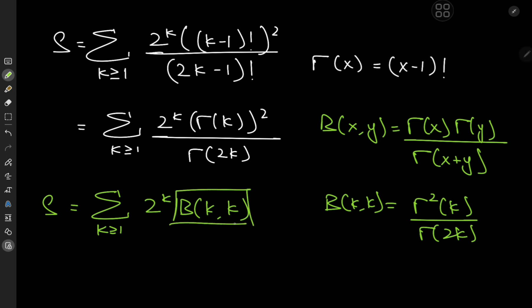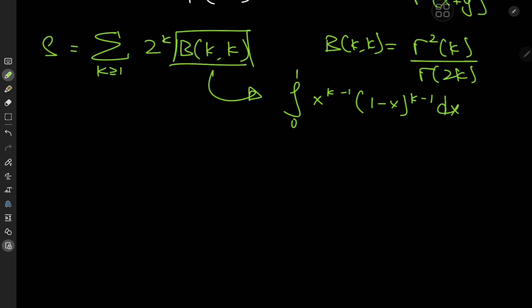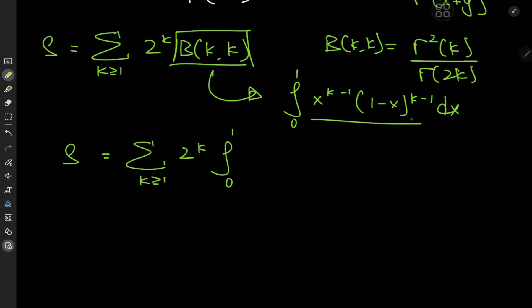The beta function would be the integral from 0 to 1 of x to the k minus 1 times 1 minus x to the other argument, also k minus 1, dx. Using this integral form of the beta function, I've turned my sum of factorials problem into a sum of integrals problem, which does sound pretty cool as well.